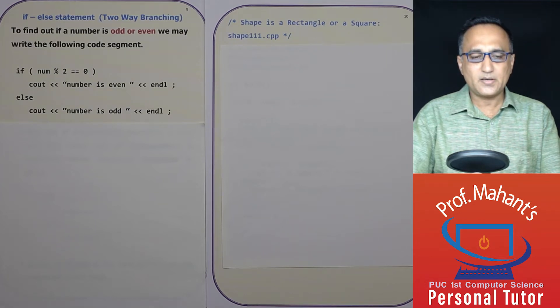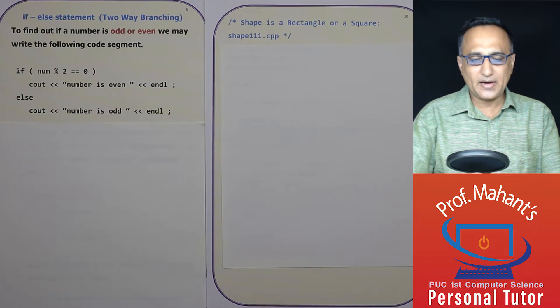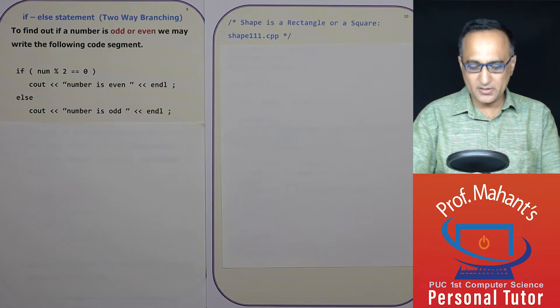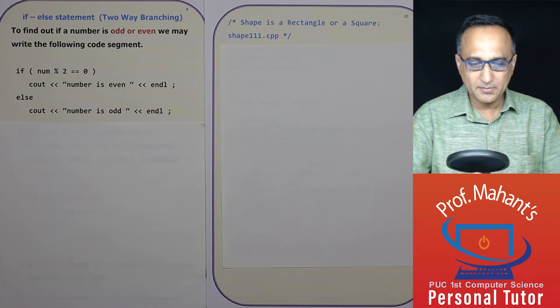Let us take a look at a control statement known as the if-else statement and a couple of examples. One is to find whether a given shape is a rectangle or a square, and the other one is to find the largest of two numbers.